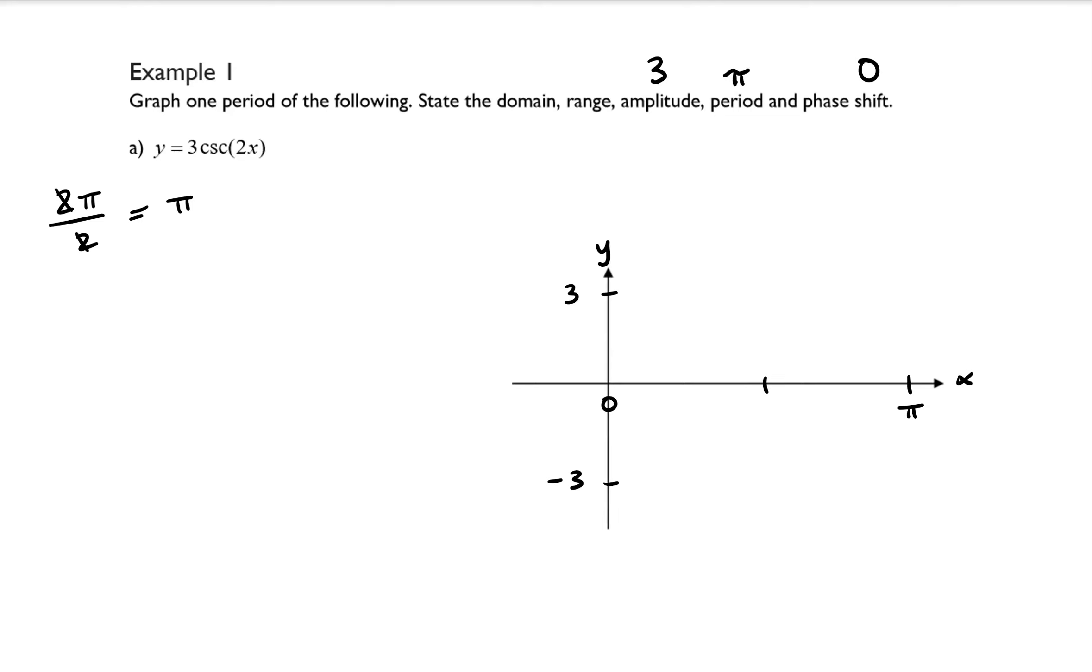I know that halfway between 0 and pi is pi over 2, and I know that halfway between 0 and pi over 2 is pi over 4, and then I know that halfway between pi over 2 and pi is 3 pi over 4.